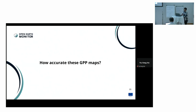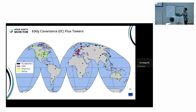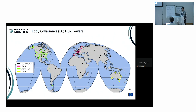To answer how accurate these GPP maps are, we can look at the eddy covariance flux towers and exploit them to validate our GPP models. The flux tower networks used for validation include FluxNet 2015 — the most famous global dataset shown as black dots on the map — and other regional networks: ICOS from Europe, AmeriFlux, and AusFlux from Australia. FluxNet 2015 is a combination from these different networks.